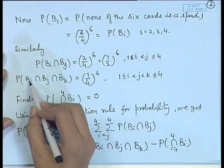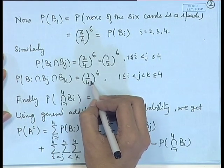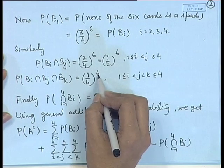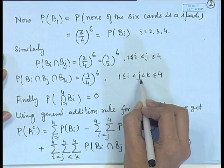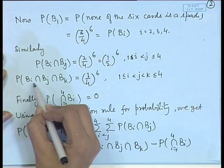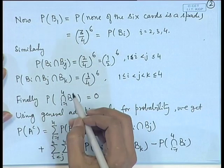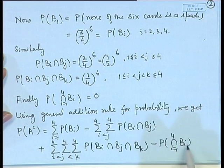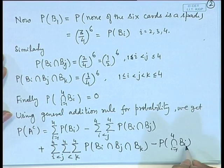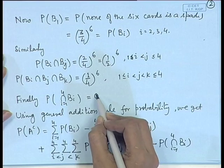If 3 suits do not appear, the probability in a single draw is 1/4, so in 6 draws it becomes (1/4)^6. Thus P(B_i ∩ B_j ∩ B_k) = (1/4)^6 for all i < j < k up to 4. The last term — the probability that none of the suits appear — must be 0, since any drawn card must belong to some suit.